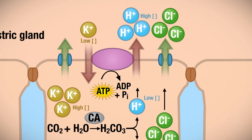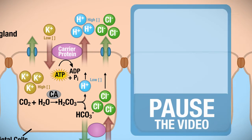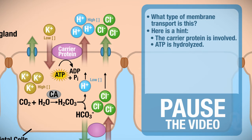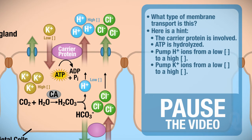If you look at the purple structure, that's a carrier protein and it requires ATP. Ask yourself, what type of membrane transport is that? A carrier protein is involved, we're hydrolyzing ATP, we're pumping hydrogen ions from low concentration to high, and pumping potassium from low concentration to high. That makes this a type of primary active transport.